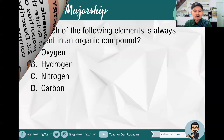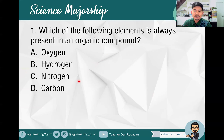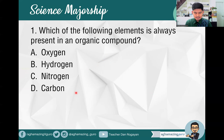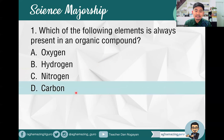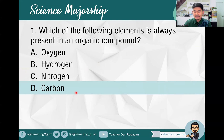Item number one: which of the following elements is always present in an organic compound? A. Oxygen, B. Hydrogen, C. Nitrogen, D. Carbon. The answer is letter D — Carbon. Carbon is always present in an organic compound.